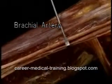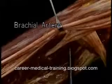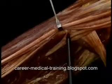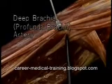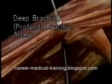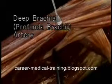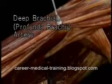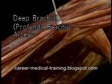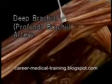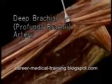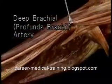Here, right next to the latissimus tendon, it gives off a large branch — the deep brachial, or profunda brachii — which passes backward deep to the triceps. Along with it goes the radial nerve, which we'll see in a minute.